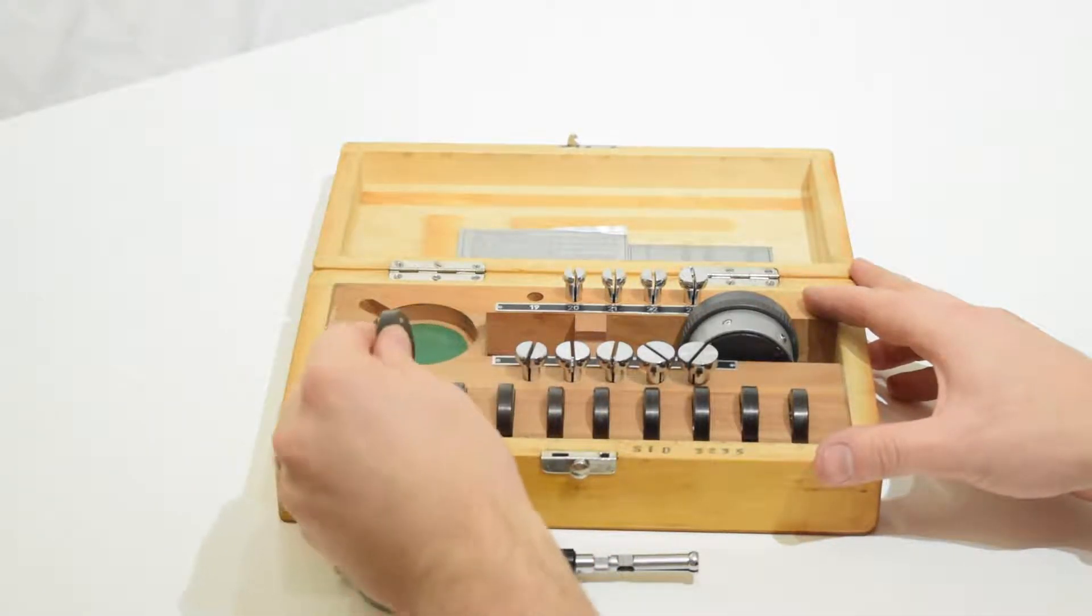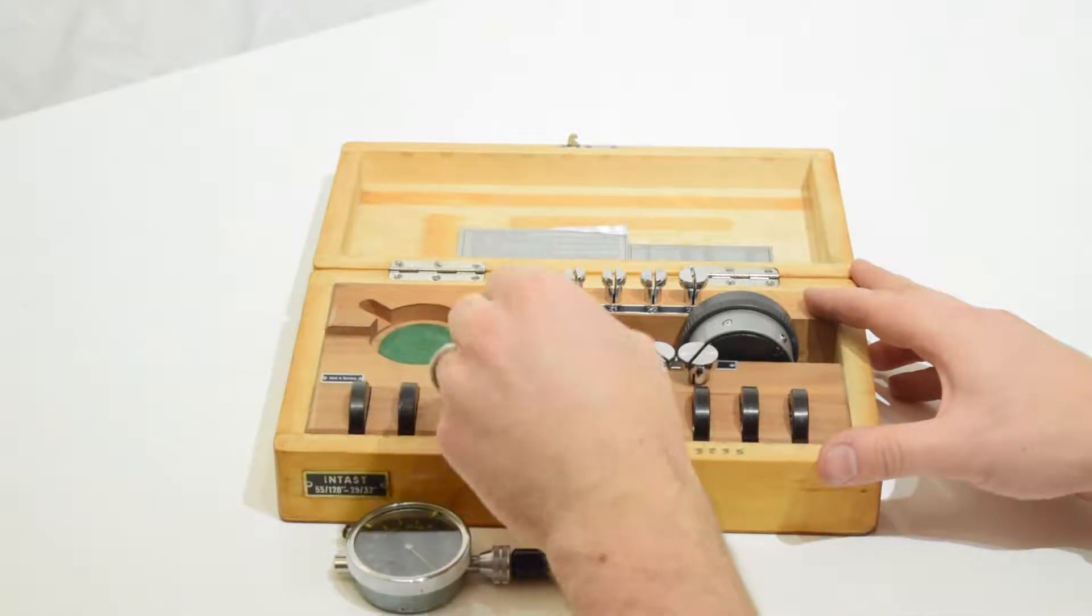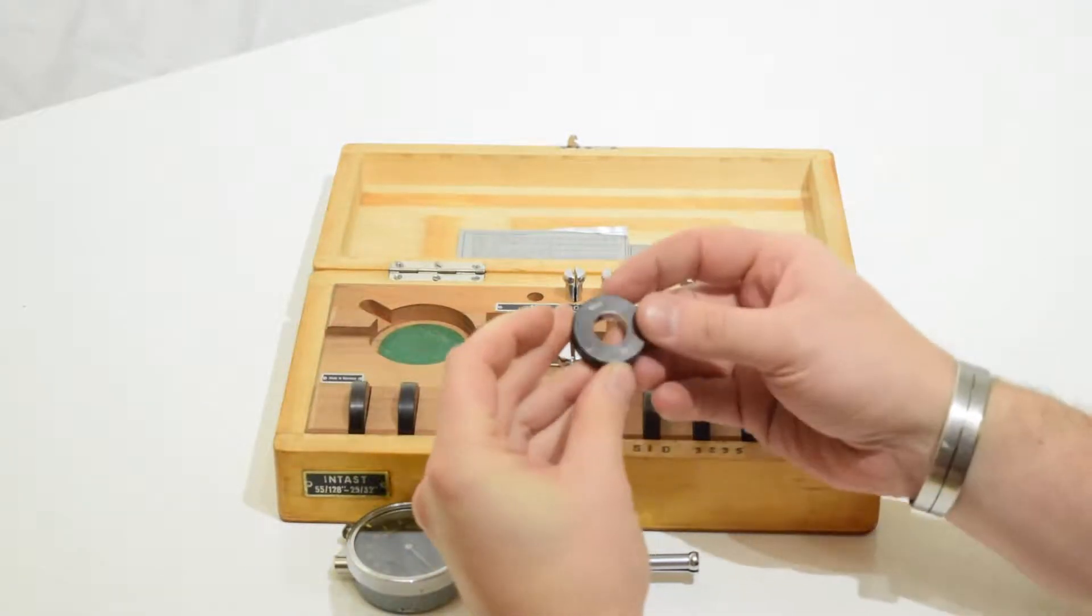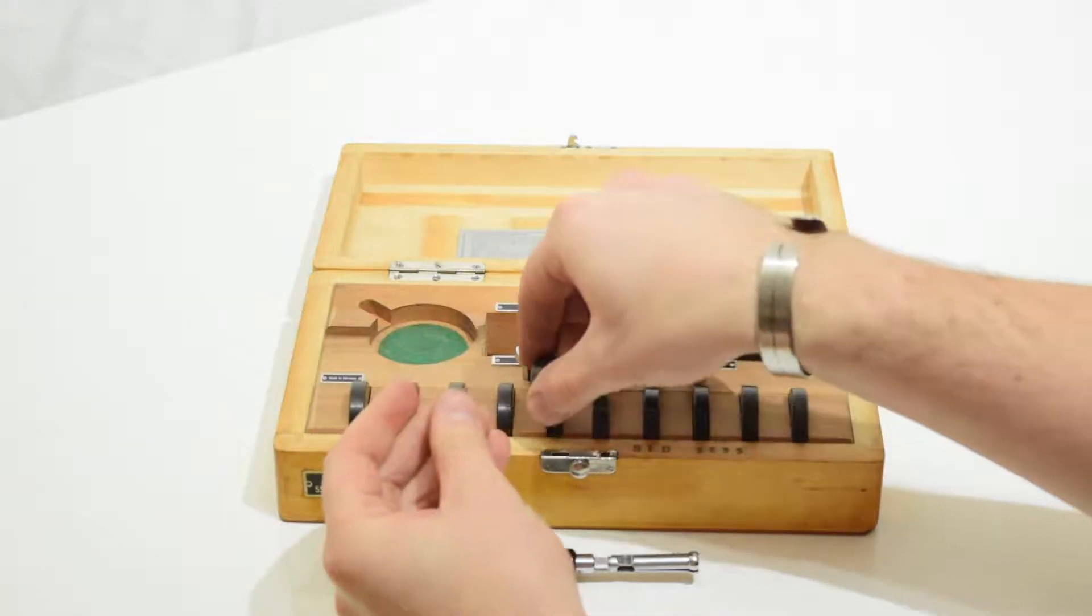Here are the gauges, the ring gauges or setting rings, one for each of the split ball heads. They're all in very nice condition.